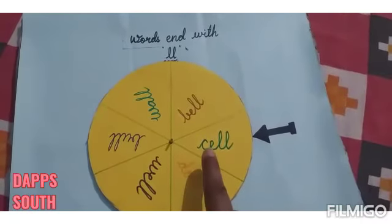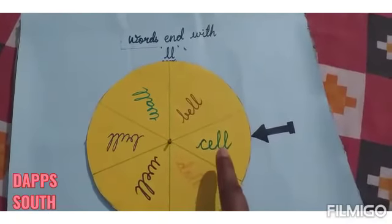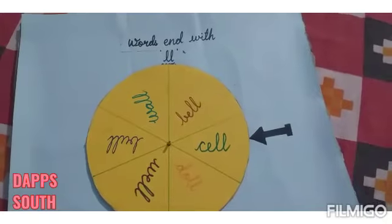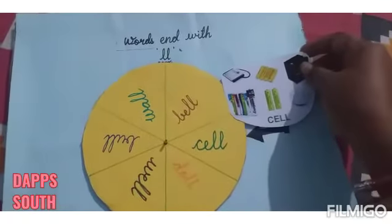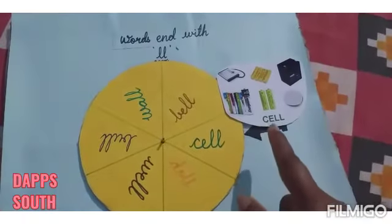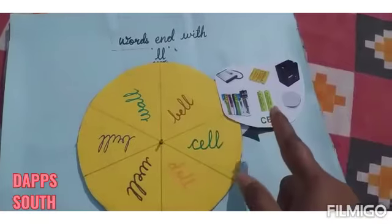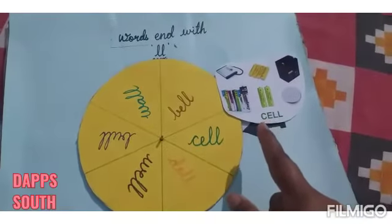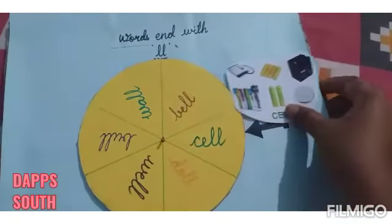This is C-E-L-L. Cell. Cell. Cell means batteries — different batteries. Unko hum bolte hain cell. Okay?